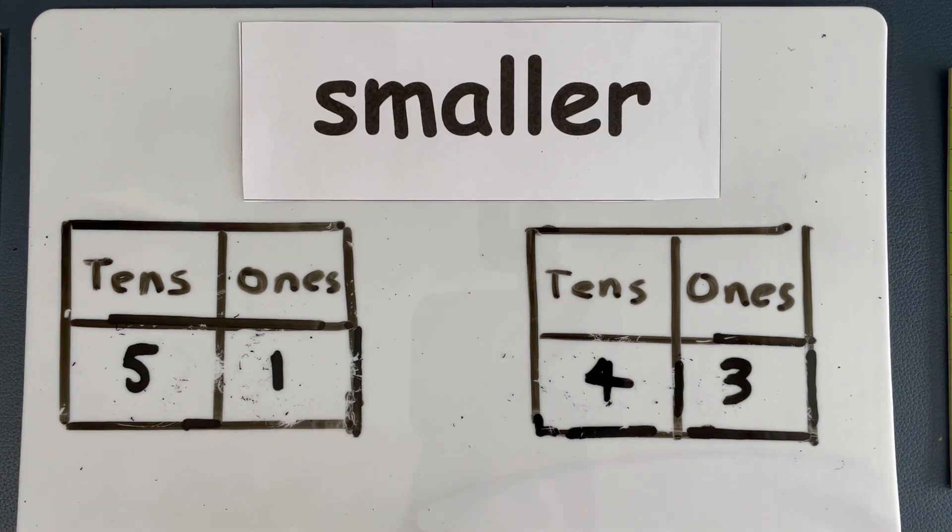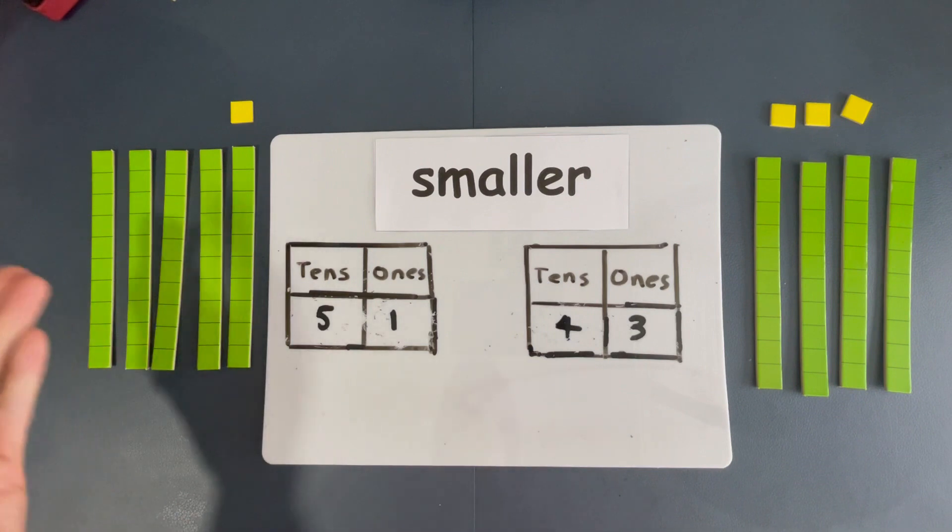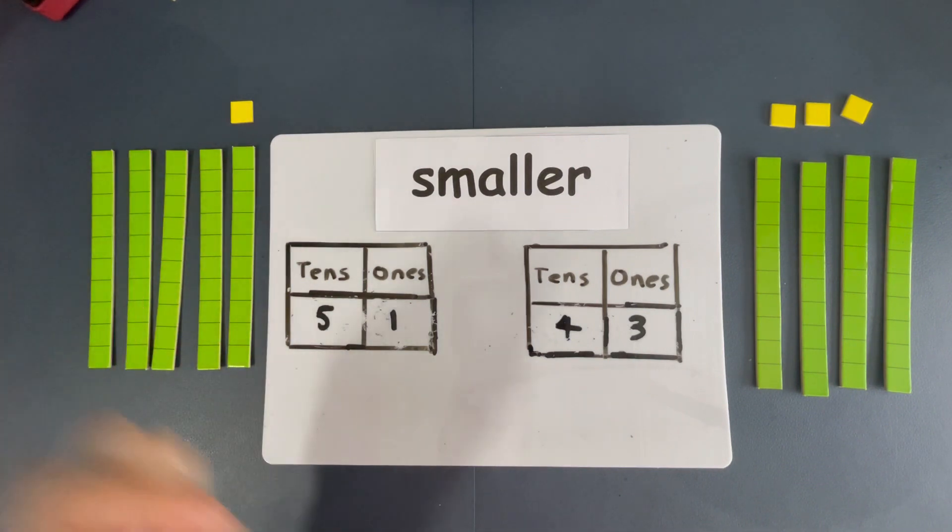Now, with 51 and 43, can you tell me which number is smaller? Once again, I need you to look at the tens, okay? And look at which one is smaller. Is it 5 or is it 4? 4 is smaller, right? So, 43 is the smaller number. 43, okay? And once again, so you can see clearly, this is 43. 4 tens, 3 ones. And this is 51. 5 tens and 1 one. You can already see that this one is the smaller number, okay?